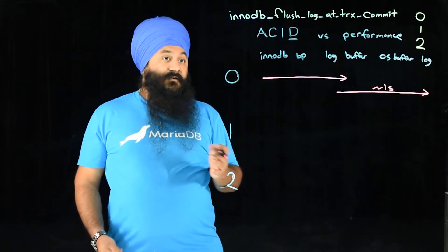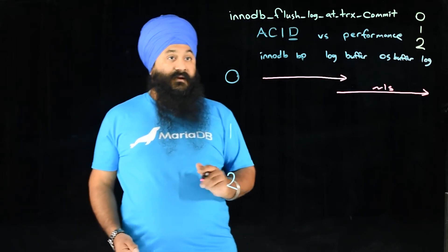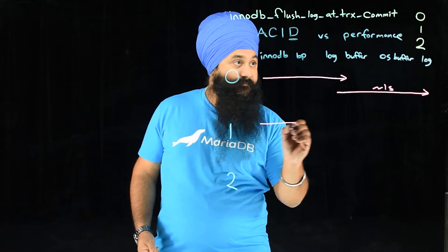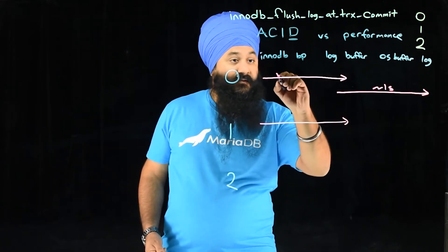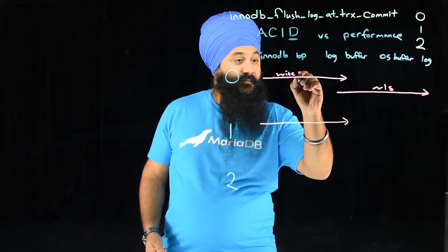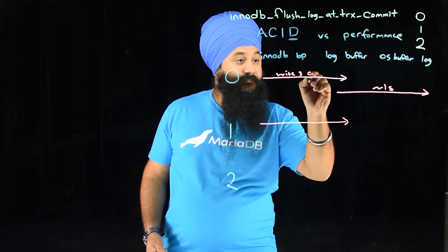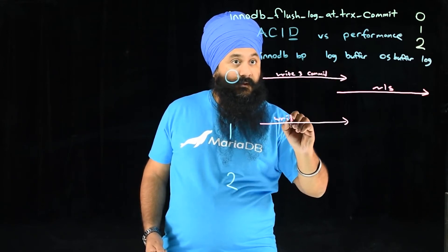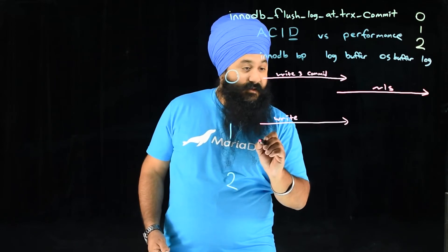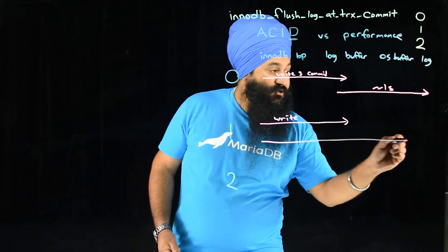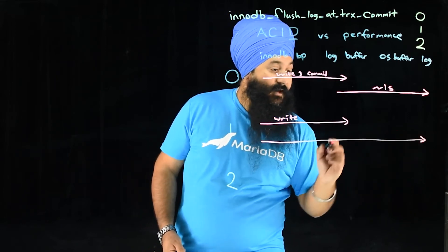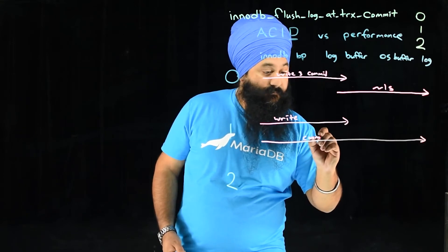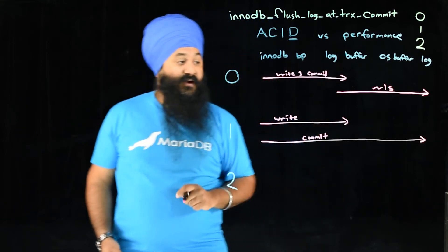If you set it to one, which is maximum durability, your write goes to the log buffer. This is your write and commit, and the commit ensures that it is written all the way to disk with every single transaction.